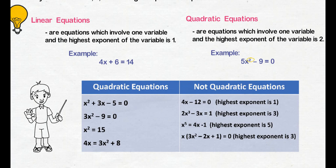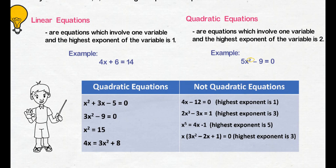Now let's look at the not quadratic equations. We have 4x minus 12 equals 0 — the highest exponent is 1. Next, 2x cubed minus 3x equals 1 — the highest exponent is 3. Next, x raised to 5 equals 4x minus 1 — the highest exponent is 5. And lastly, the product of x and 3x squared minus 2x plus 1 equals 0 — the highest exponent is 3.